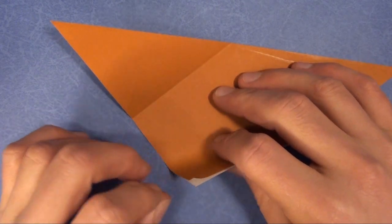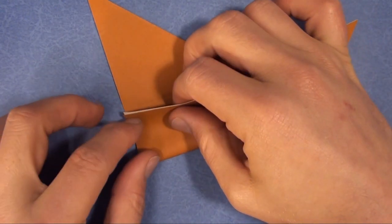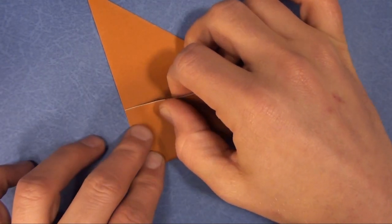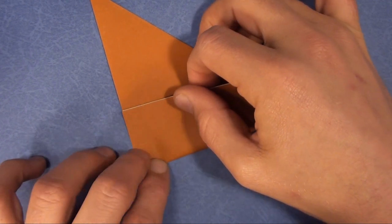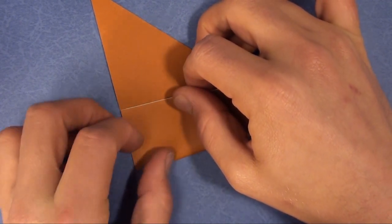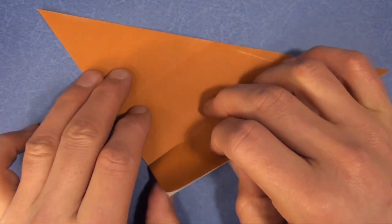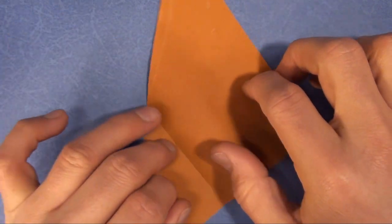We're going to fold this corner to that crease. But this time, don't fold it all the way. Just fold it an inch. Crease it an inch just like that. And rotate it again.